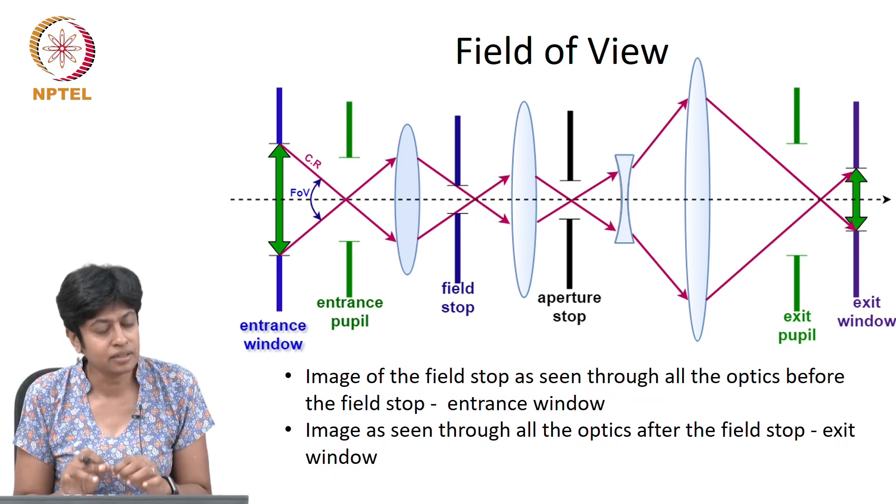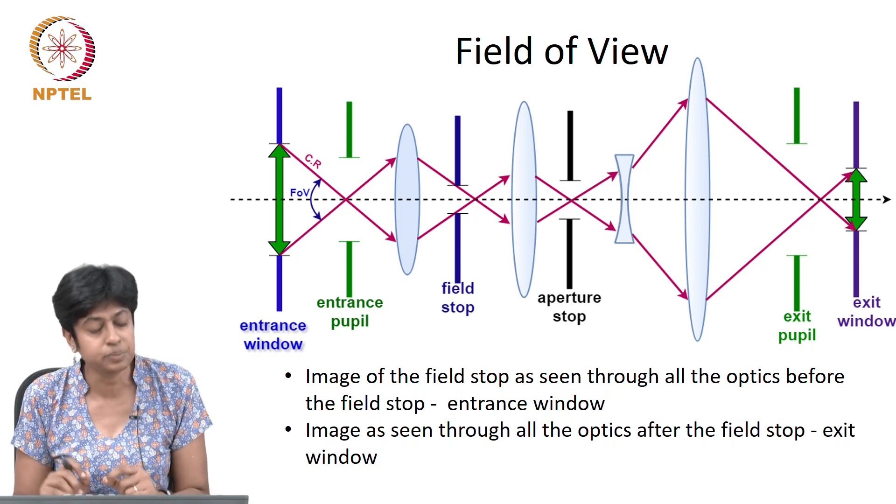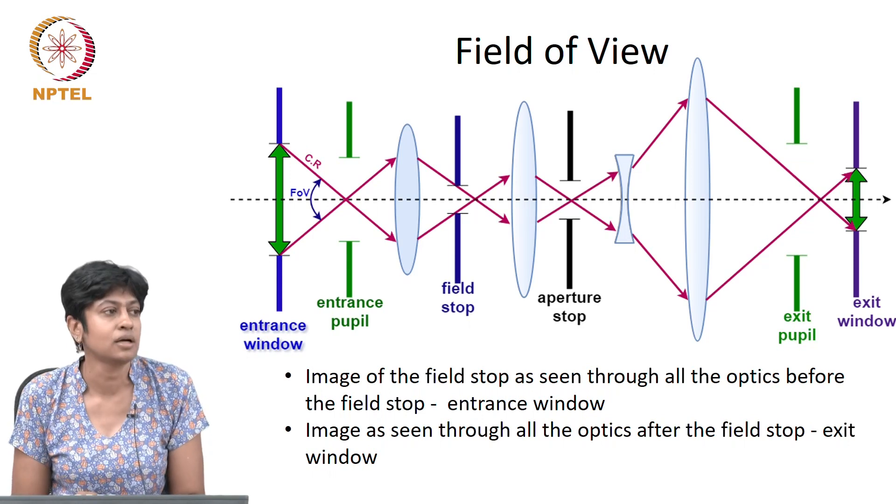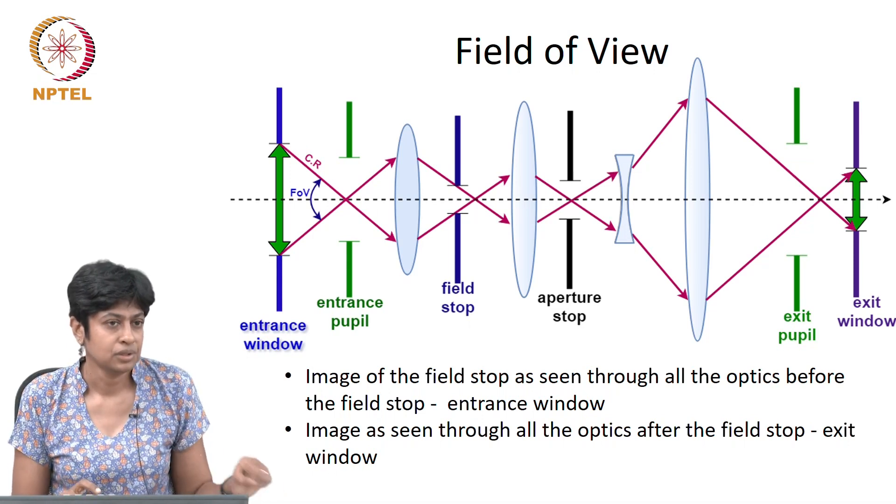And this then just traces it out through a system with more than one lens. Again, I am just redefining what the entrance and exit windows are, just so that you are familiar with those terms.